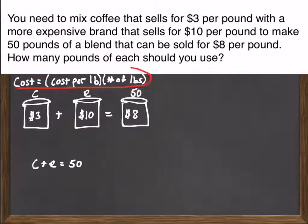To get the second equation, we really use this relationship. This underlying relationship, the cost is equal to cost per pound times the number of pounds. So in other words, if we take each of our things across the top, the number of pounds, times the cost per pound, we'll get an expression for the total cost.